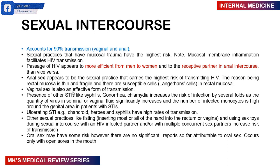There has been a lot discussed about circumcision and the reduction of HIV transmission. Circumcision actually reduces the risk of males acquiring HIV by about 50% to 60%. When someone is circumcised, the foreskin is removed. Beneath the foreskin you have susceptible epithelium. Once you remove that, the epithelium that remains is keratinized stratified epithelium, which is more resistant to HIV infection, thereby reducing transmission.